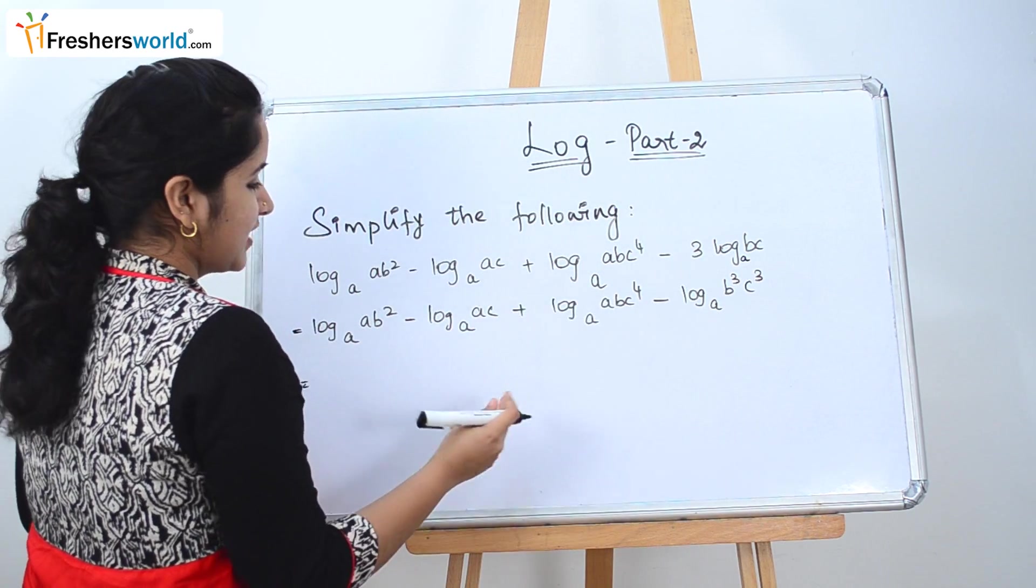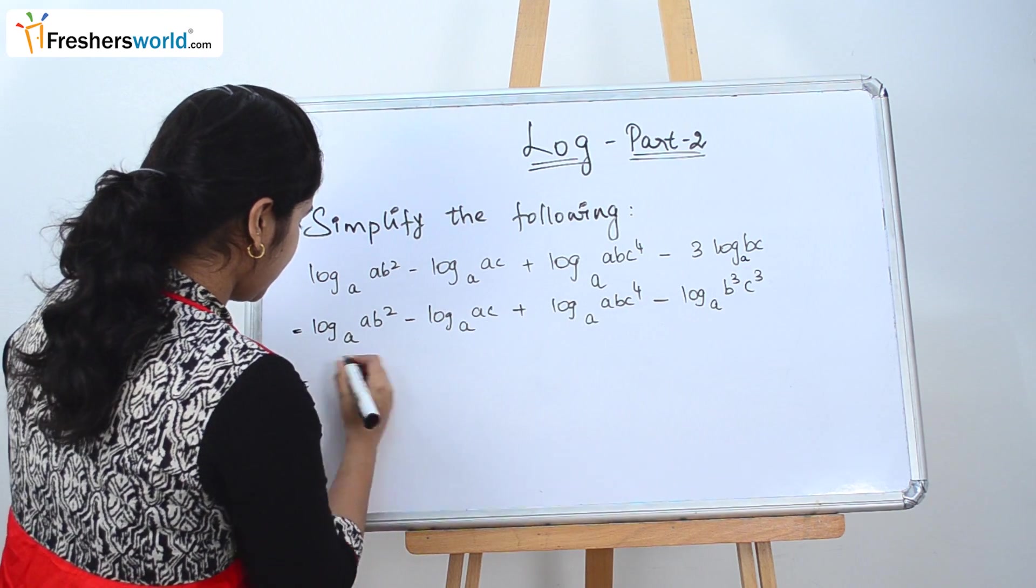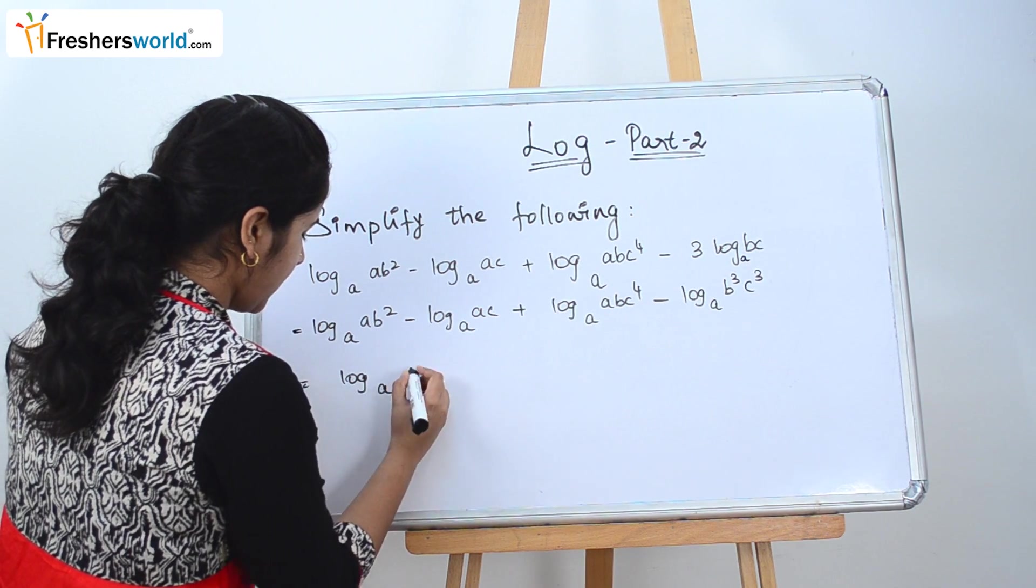So as we know that all the plus signs will be multiplied and the minus signs will be divided. So that's what we are going to do as we have the common base as log a.